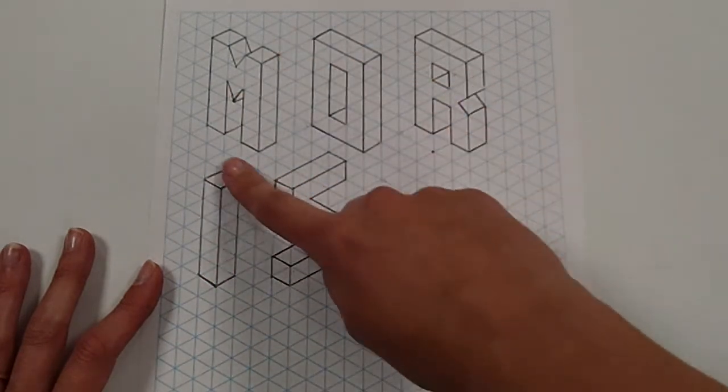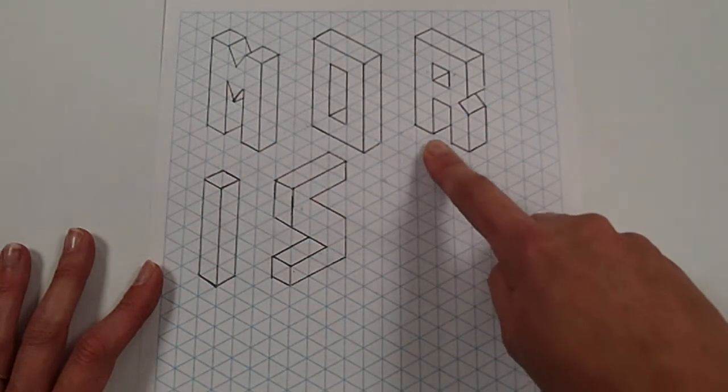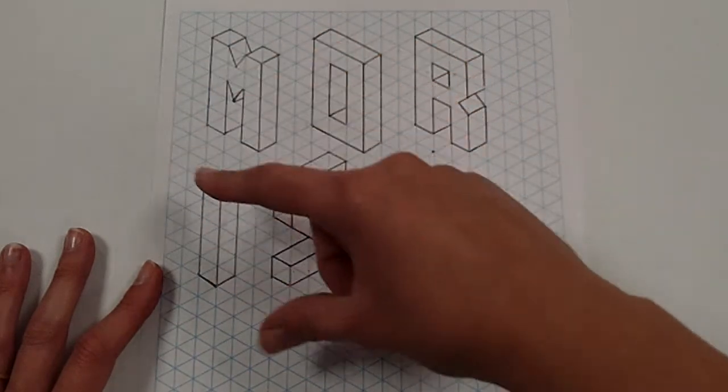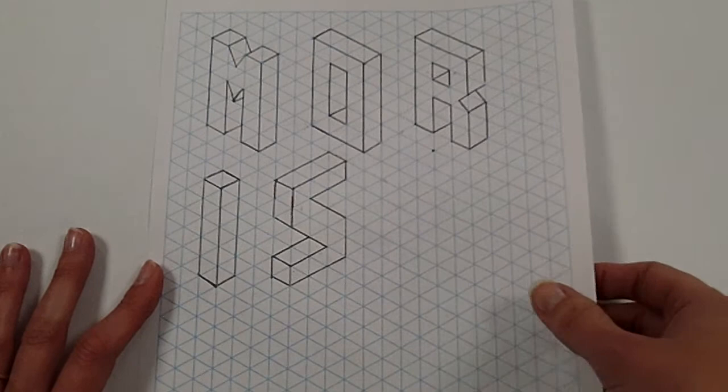Once you've got those letters all standardized to the same measurements, obviously 50 by 30, and you've got them all standardized, then you're ready for the next section. So I'm going to pop that to one side and I've got a nice clean sheet here of A3 paper.